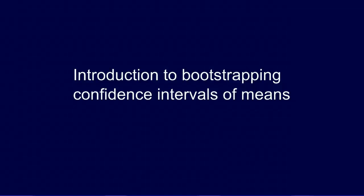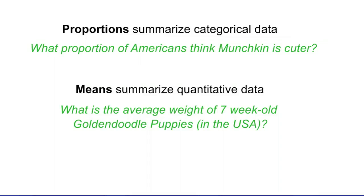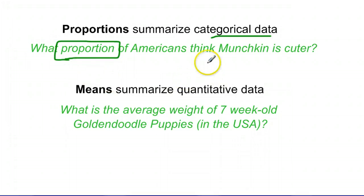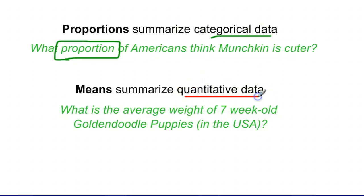Now we're going to look at bootstrapping confidence intervals with means. Proportions and means are a little bit different. Proportions summarize categorical data — for example, the question we asked earlier: what proportion of Americans think Munchkin is cuter? We're looking at what proportion would say yes out of two possible options in categorical data. Means, on the other hand, are used to summarize a list of numbers — quantitative data.